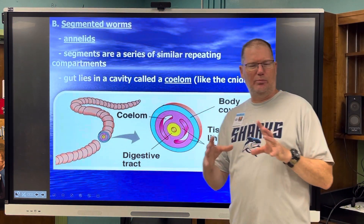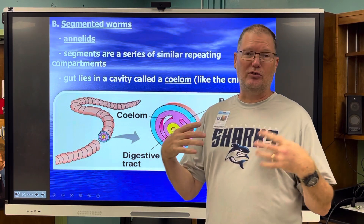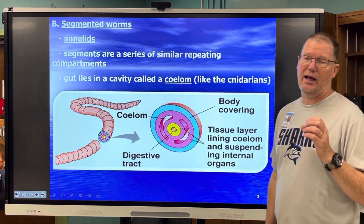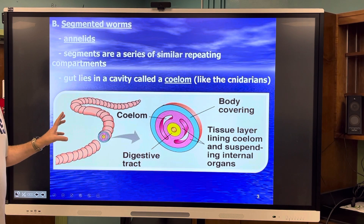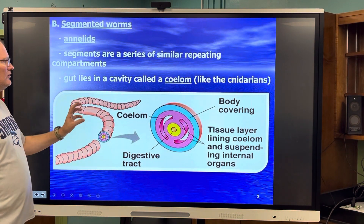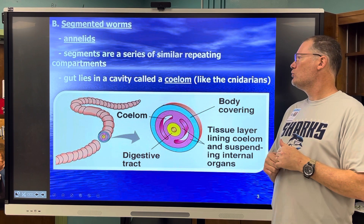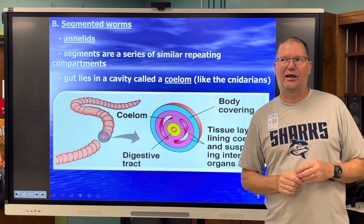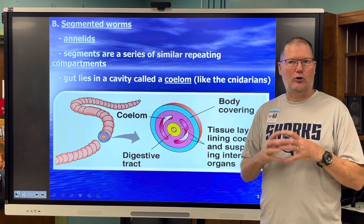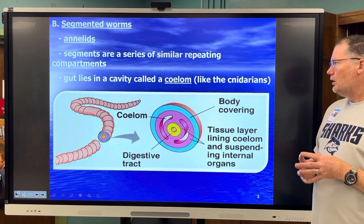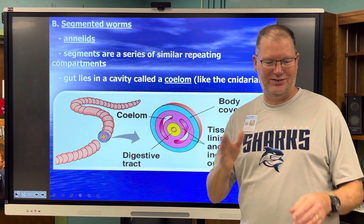I'm not going to spend too much time on any one particular phylum, but segmented worms are a pretty big one. Segmented worms are called annelids. Earthworms are a terrestrial example. These are the first level of organisms that have a true coelom — other than the cnidarians we discussed, like a sea anemone. They have a body cavity called a coelom, and they have these repeating segments.